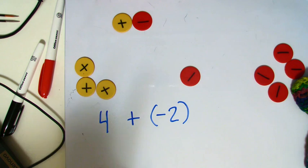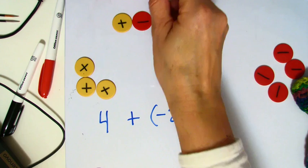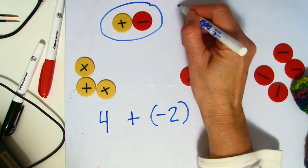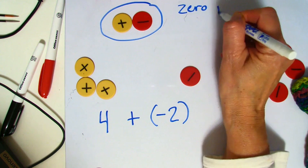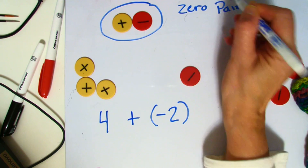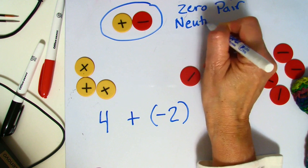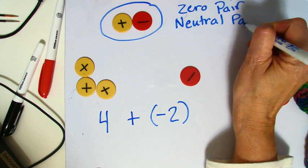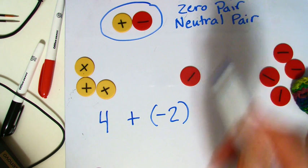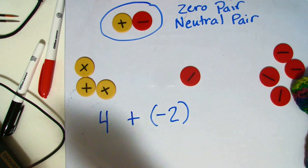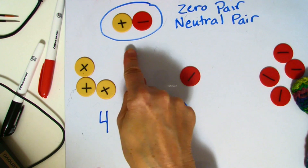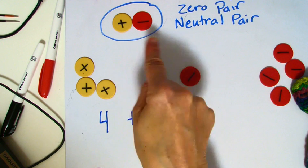Because if I have a dollar, but I owe a dollar, that means after I pay my debt, I'm not going to have any money left. So this is referred to either a zero pair, or in the textbook, they refer to it as a neutral pair. Essentially, they're the same thing. When you pair them, it equals zero, or they neutralize each other.